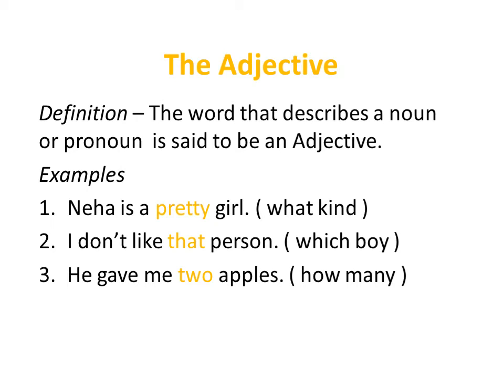So in these sentences, the words 'pretty', 'that', and 'two' are adjectives. Words that tell us what kind of a person is, which boy or girl is, or how many persons or things — they are called adjectives. They describe a noun or pronoun in a sentence. Mainly, describing words are called adjectives.